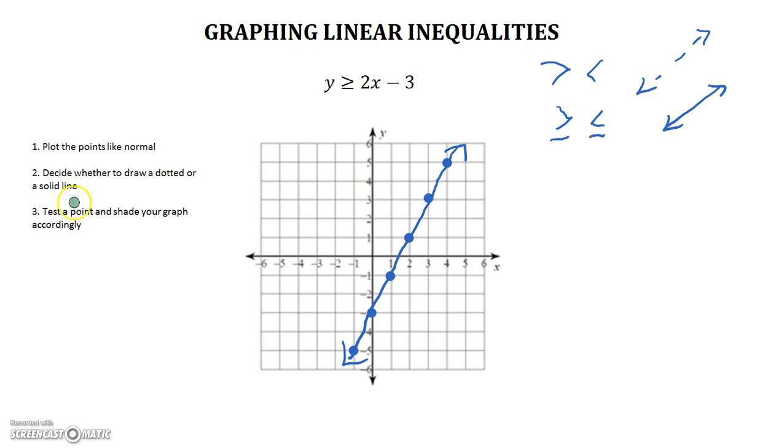Our last step is to test a point and shade your graph accordingly. The point that we've been practicing testing is 0, 0, simply because 0, 0 will probably require less math. So 0, 0 are the x and y coordinates of that point. We're going to plug that right into our inequality. 0 is greater than or equal to 2 times 0 minus 3. 0 is greater than or equal to 0 minus 3. 0 is greater than or equal to negative 3.